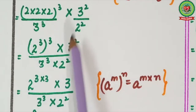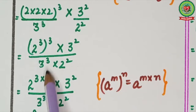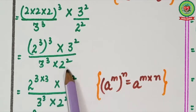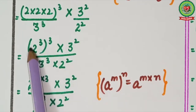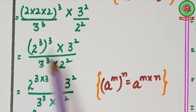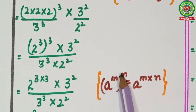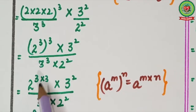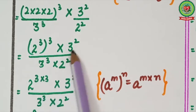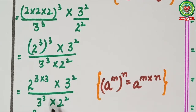Now we apply the law: a raised to power m, bracket n, equals a raised to power m × n. So (2 raised to power 3) raised to power 3 becomes 2 raised to power 3 × 3. We write: 2 raised to power 3×3, multiplied by 3 raised to power 2, upon 3 raised to power 3 multiplied by 2 raised to power 2.